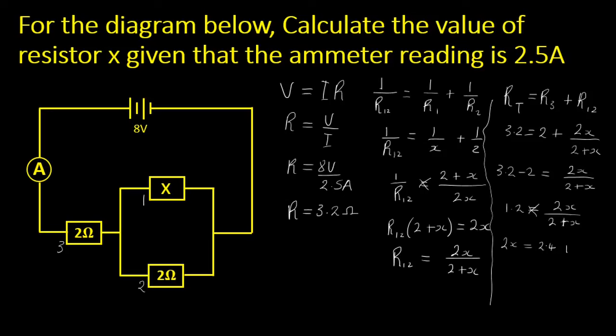So let's group x on one side. We'll have 2x minus 1.2x being equals to 2.4. So 2x minus 1.2x should give us 0.8x, all this is equals to 2.4. Hence if we divide both sides by 0.8, we see that the value of x is simply 3. So the value of x is 3 ohms.